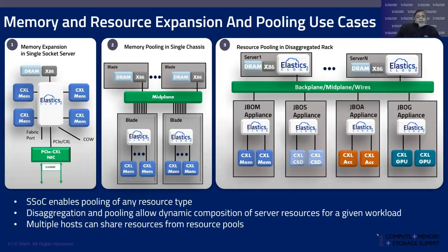Use case one: a typical single-socket server can support between 3 to 6 terabytes of memory. With CXL, that can be 2.5x higher — reaching 15 terabytes inside a single-socket server. CXL memories can also be shared across multiple servers on the network. Sharing CXL memory modules across the network gives higher performance, reduces latency to memory because data doesn't have to go through the CPU, and reduces TCO at scale.